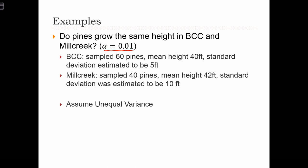So in Big Cottonwood Canyon they sampled 60 pines that had a mean height of 40 feet and a standard deviation estimated, so a sample standard deviation of 5 feet. In Mill Creek Canyon they had 40 pines with a mean height of 42 feet and a standard deviation of 10 feet. Here we're being told to assume unequal variances.